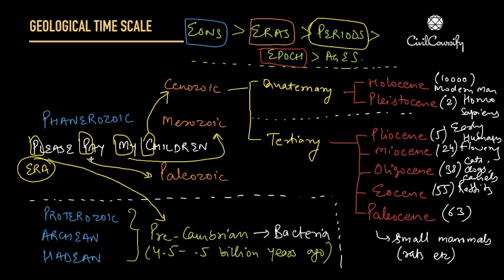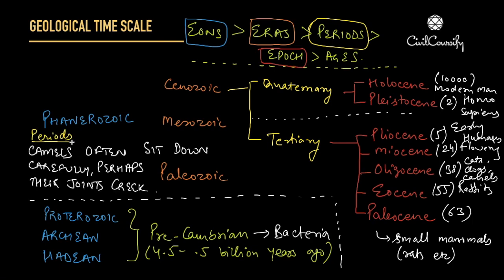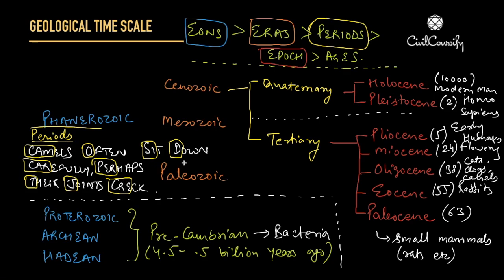The second mnemonic to remember various periods of the eras is: 'Camels Often Sit Down Carefully, Perhaps Their Joints Creak.' Camels = Cambrian, Often = Ordovician, Sit = Silurian, Down = Devonian, Carefully (Car) = Carboniferous, Perhaps = Permian, There (T) = Triassic, Joints (J) = Jurassic, Creak (CRE) = Cretaceous. Tertiary and Quaternary are simple enough that you don't need a mnemonic for them.